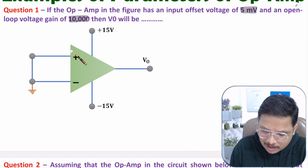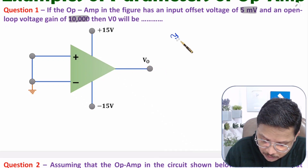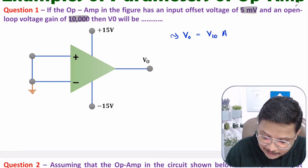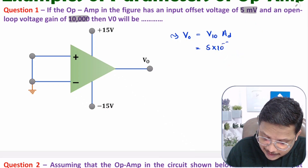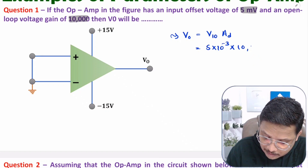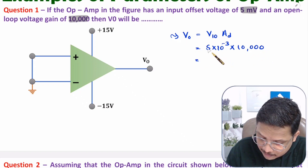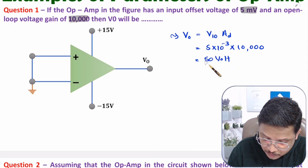For a practical op-amp, the output is input offset voltage multiplied by differential gain. Here the input offset voltage is 5 millivolt and the differential gain is 10,000. So the output is 5 milli × 10,000 = 50 volt.